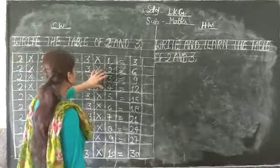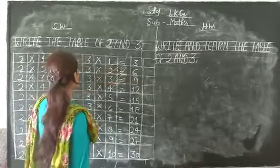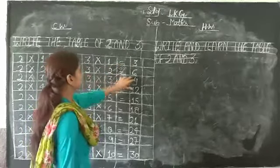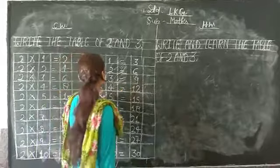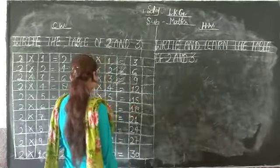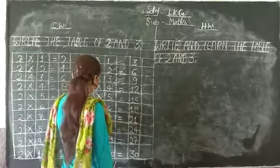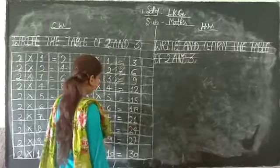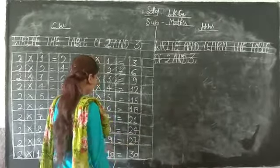Now the table of 3: 3 times 1 is 3, 3 times 2 is 6, 3 times 3 is 9, 3 times 4 is 12, 3 times 5 is 15, 3 times 6 is 18, 3 times 7 is 21, 3 times 8 is 24, 3 times 9 is 27, 3 times 10 is 30.